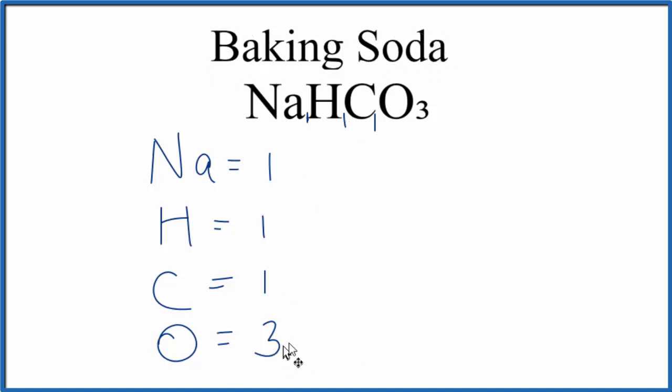To do that, you multiply the number of oxygen atoms times Avogadro's number. So three times Avogadro's number gives us this, which is the number of oxygen atoms in one mole of baking soda, NaHCO3.